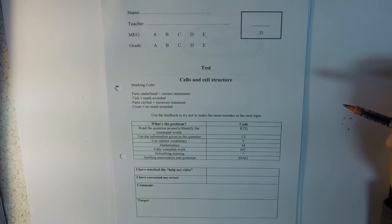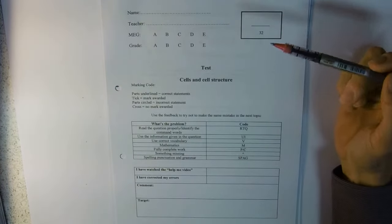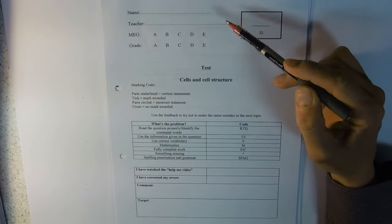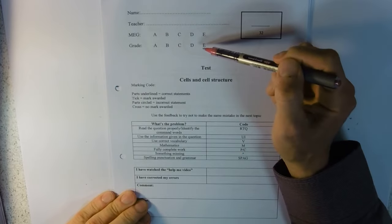This is the help me video for the cells and cell structure test. I'll just run through what's on the front here. It's out of 32, your name, the teacher, your minimum expected grade, and the actual grade that you've got.